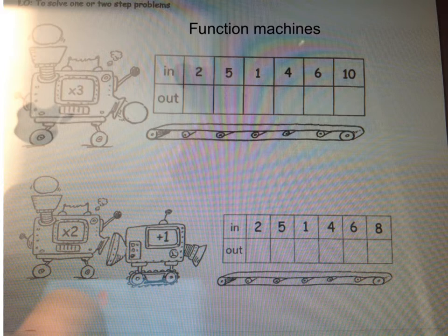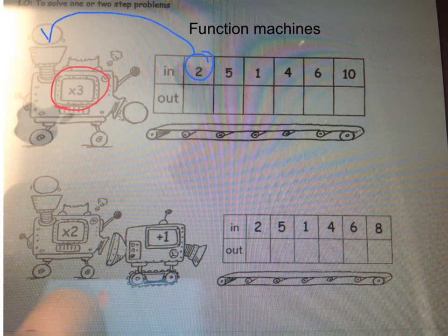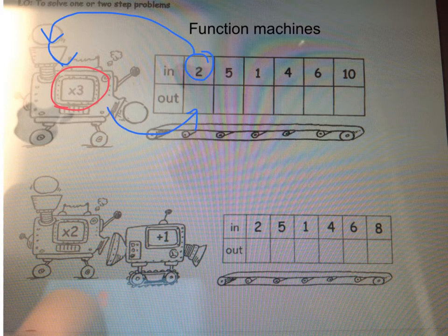So, we're going to start with these really simple function machines. The first function machine we have here is multiply by 3. Now, that just means the first I'm going to put in is 2. So, I put 2 into the machine. 2 gets multiplied by 3, and it comes out with a different number, and 2 times 3 is 6.